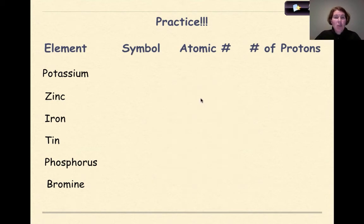Welcome back. Now you can check your work. If we have potassium, the symbol is K, the atomic number is 19, therefore the number of protons will be 19. For zinc, the symbol is Zn, the atomic number is 30, therefore the number of protons must be 30. For iron, iron is Fe, the atomic number is 26, therefore the number of protons must be 26. I think we can see a trend here.